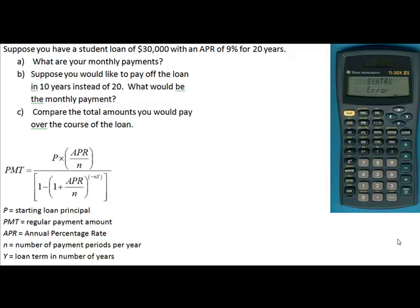To begin, we are going to figure out what the monthly payments would be for a 20-year loan at 9%. The first step in doing any of these problems is to carefully plug in the information given into the problem. In our particular problem, the starting loan principal is $30,000.